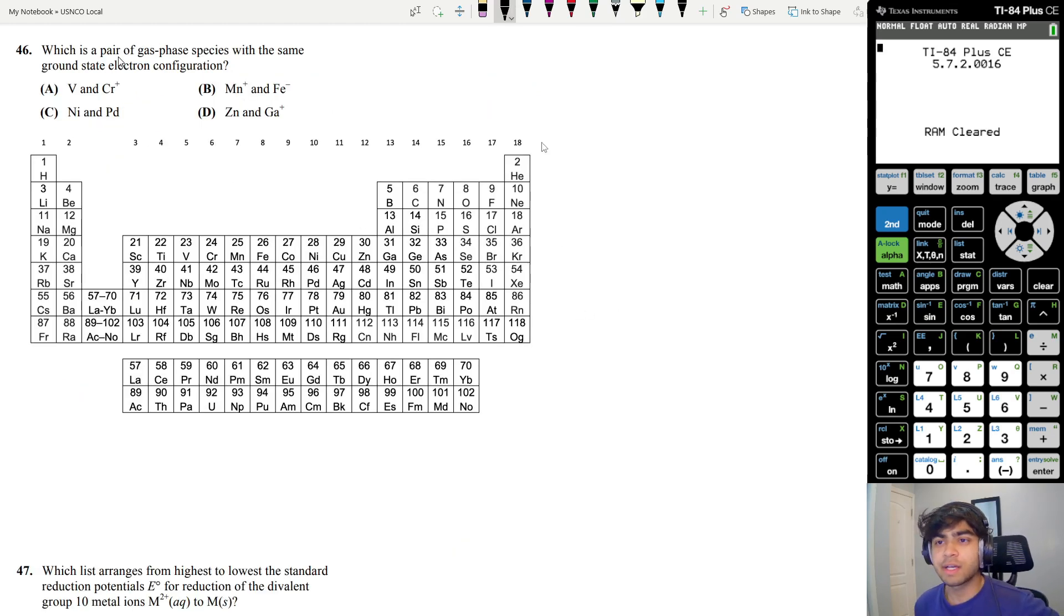Let's move on to question 46. What is a pair of gas-based species with the same ground state electron configuration? I think the best way we can start this is by looking at which ones first of all have the same number of electrons. A is vanadium, which has 23 electrons, and chromium plus has 24, but since it's plus, it lost one electron, so it has 23, same as vanadium. So we can keep A.